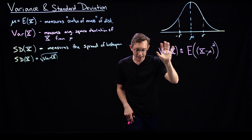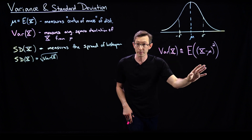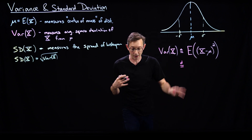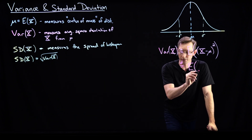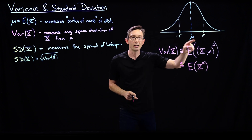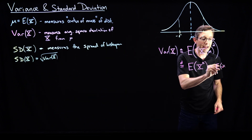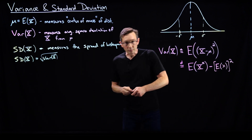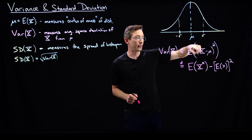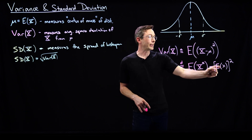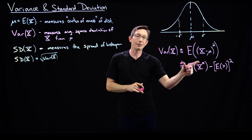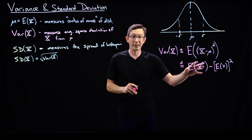We can derive a very useful formula. This is also equal to — and this is something we have to derive, it's not obvious — the expectation of x squared minus the expected value of x, quantity squared. Since the expectation of x is just mu, this becomes the expectation of x squared minus mu squared. So if I know the mean, I only need to compute the second moment of my probability distribution.